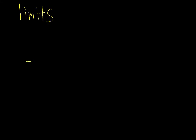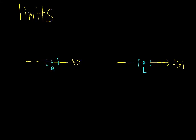The concept of a limit for a multivariable function is basically the same as for a single variable function. For a single variable function, the domain and the image are both on the real number line. If we can make f of x as close as we want to some value l by restricting the x value to some interval around point a, so that for all x values inside this interval around a, except at a itself, the value of the function is very close to l, then we say that the limit as x approaches a of f of x is equal to l.